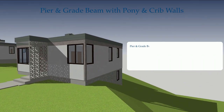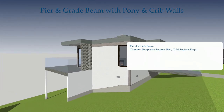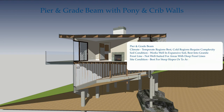Pier and grade beam: Climate — temperate regions best; cold regions require additional complexity. Soil condition — works well in expansive soil, best when reaching into granite. Frost line — not well suited for areas with deep frost lines. Site condition — best for steep slopes or to avoid tree roots. Waterproofing — erosion control essential with a well-ventilated crawl space. Cost — costlier, requires an engineered system.